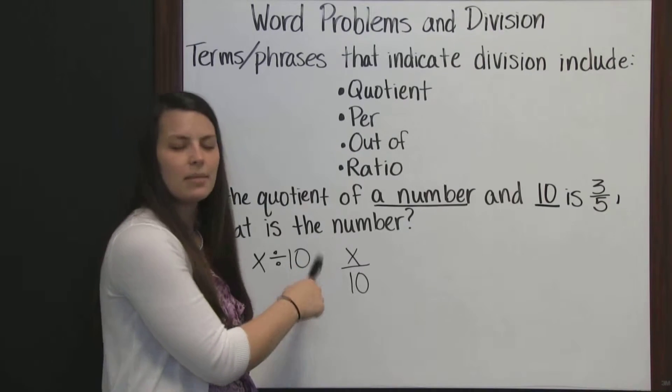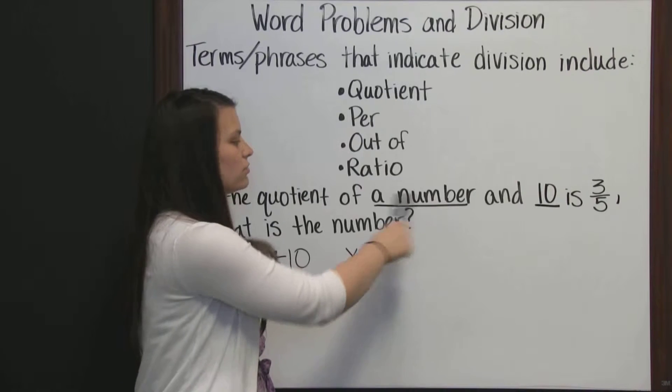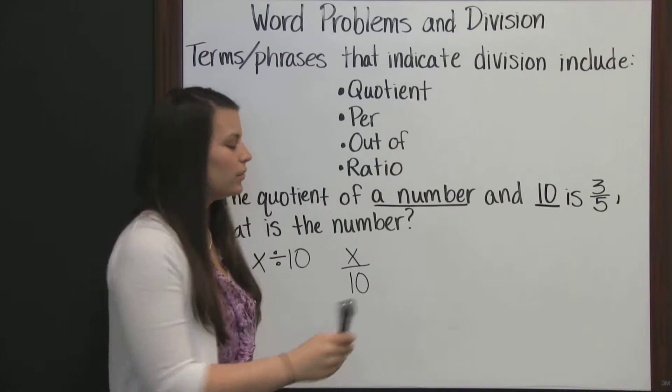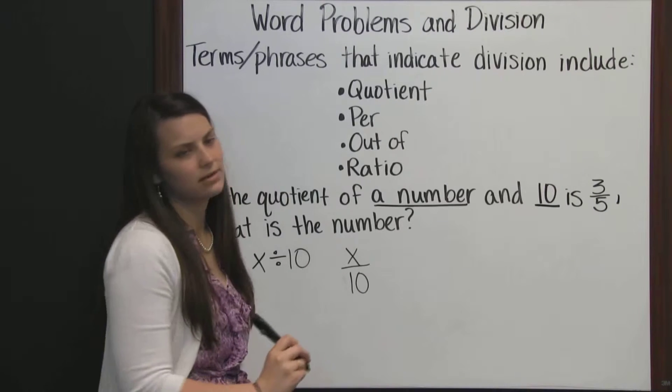And you'll see here that I put x. And I put an x because we don't know that number. It just said a number. So when we don't know a number, we use a variable in place of that.